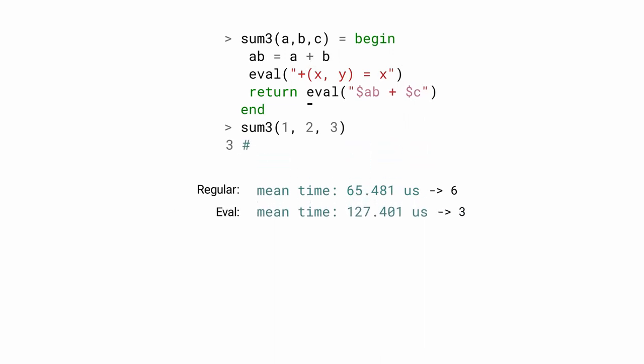The second way is to use invokeLatest, a special function that has access to the newest definitions. Using invokeLatest is still slower than the regular call, but it is faster than eval.